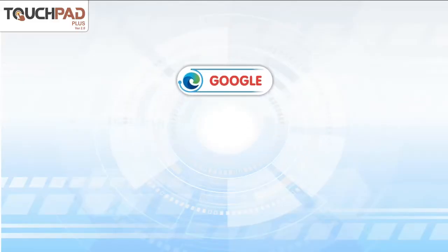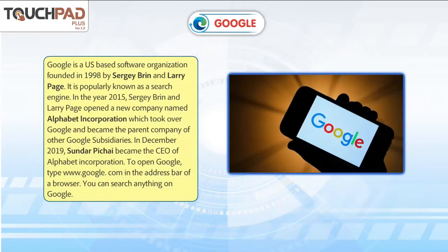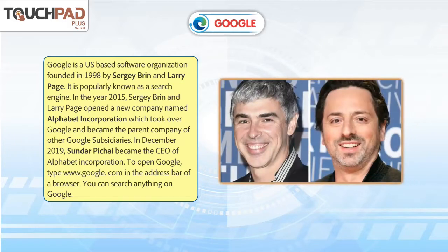Google is a US-based software organization founded in 1998 by Sergey Brin and Larry Page. It is popularly known as a search engine. In the year 2015, Sergey Brin and Larry Page opened a new company named Alphabet Incorporation, which took over Google and became the parent company of other Google subsidiaries.